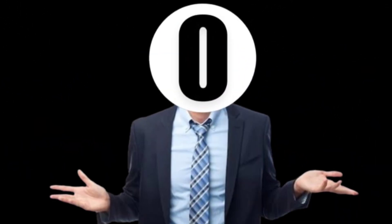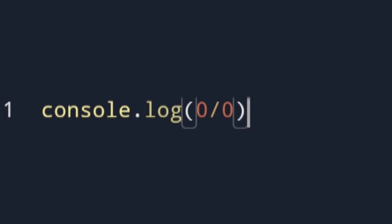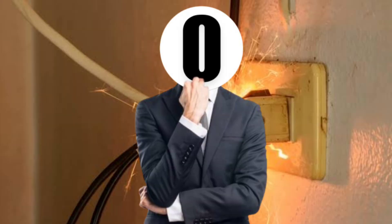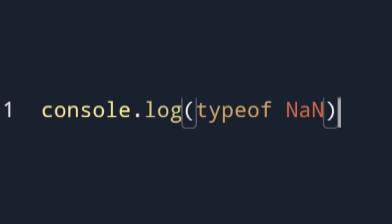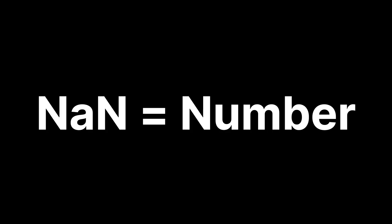For example, when you divide zero by itself, in mathematics it's undefined. But in JavaScript, it's NaN. So that sparks a question: what's the type of NaN? Number, right? NaN is a number.